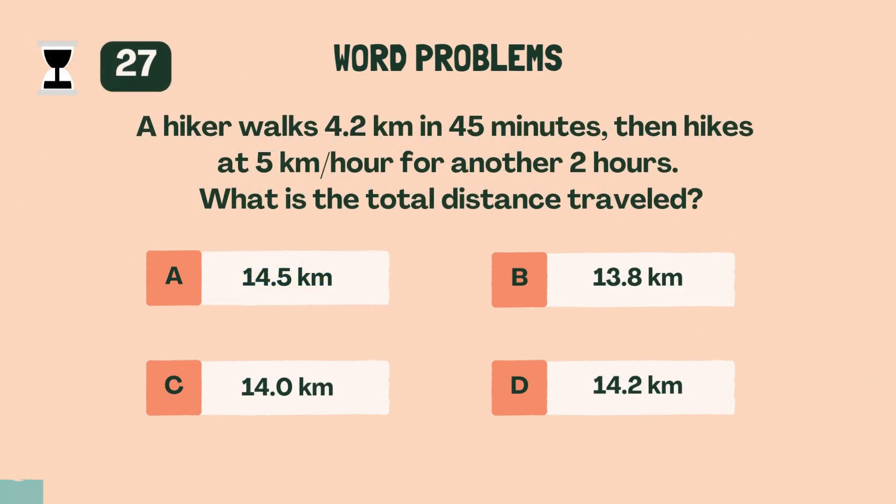A hiker walks 4.2 kilometers in 45 minutes, then hikes at 5 kilometers per hour for another two hours. What is the total distance traveled? D, 14.2 kilometers.